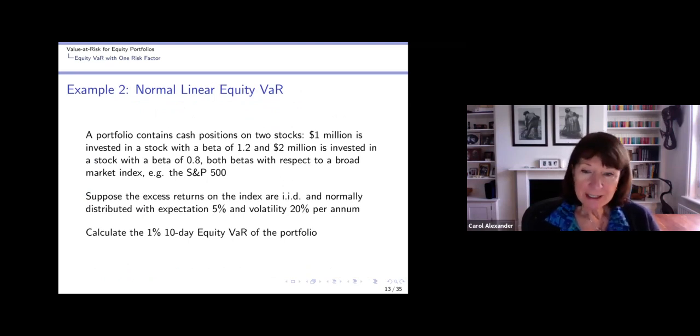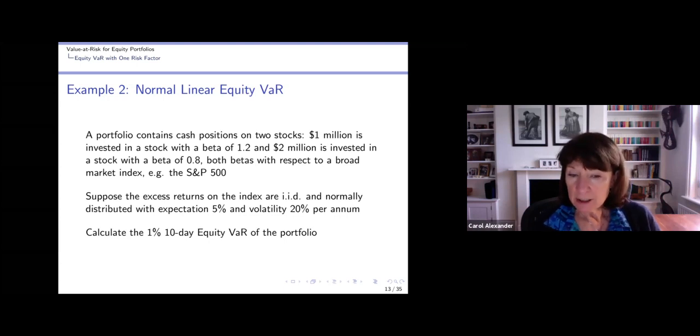Here's some numbers to help you understand the concepts that I've just shown you in equations. So suppose a portfolio contains cash positions on two stocks. One million is invested in a stock with a beta of 1.2 and two million is invested in a stock with beta of 0.8. Both betas are with respect to a broad market index like the S&P 500.